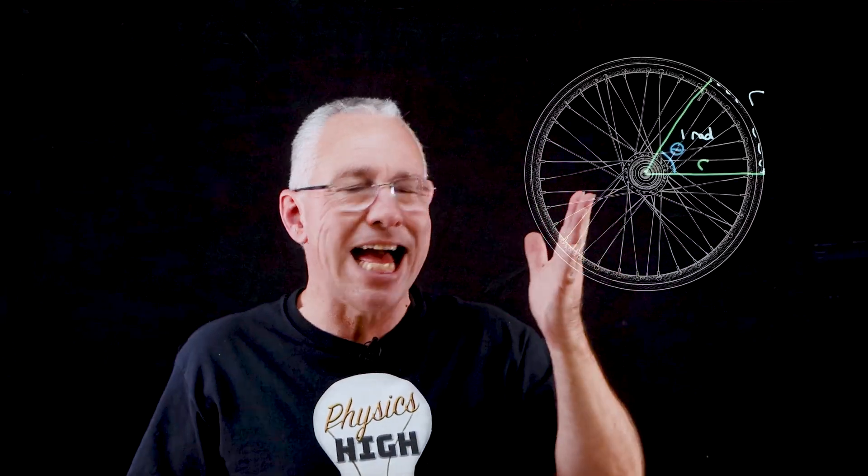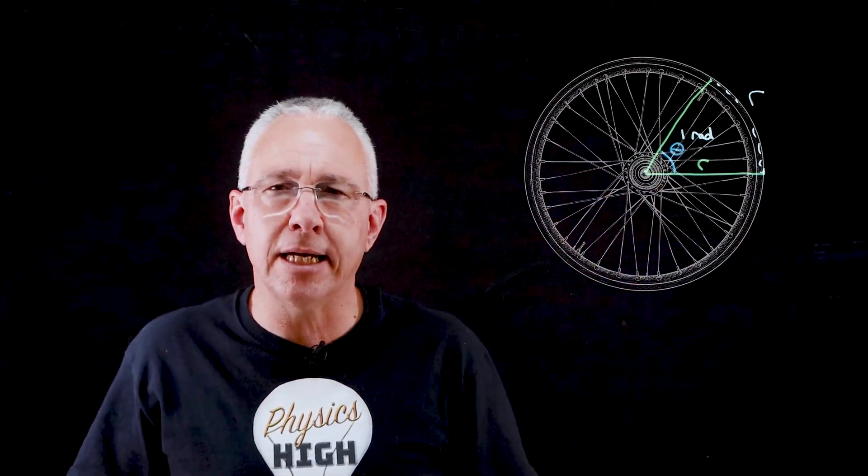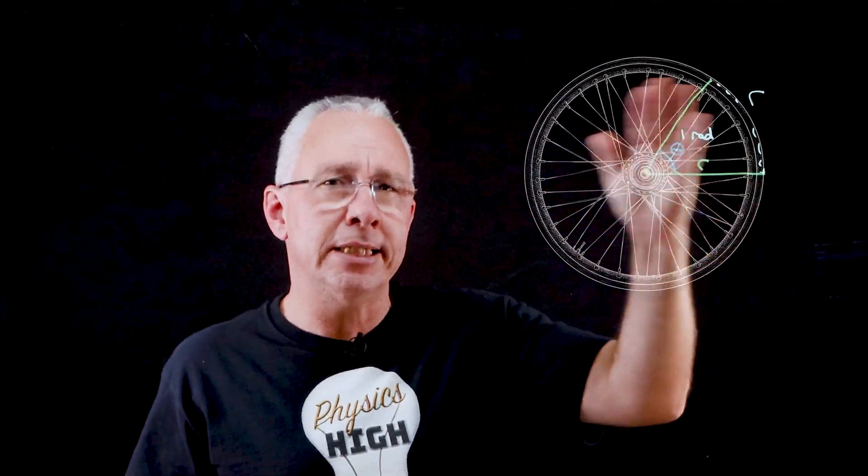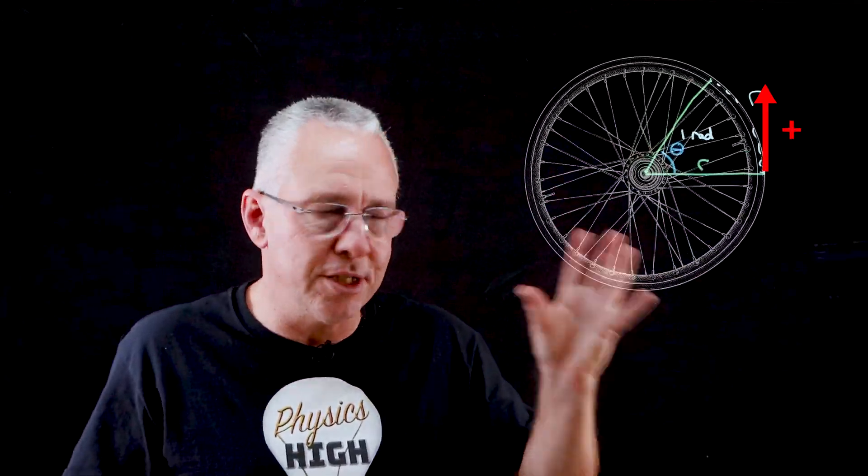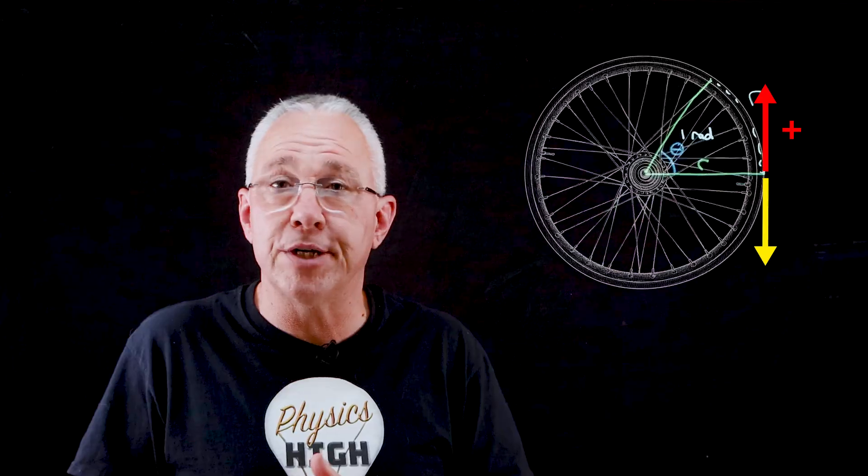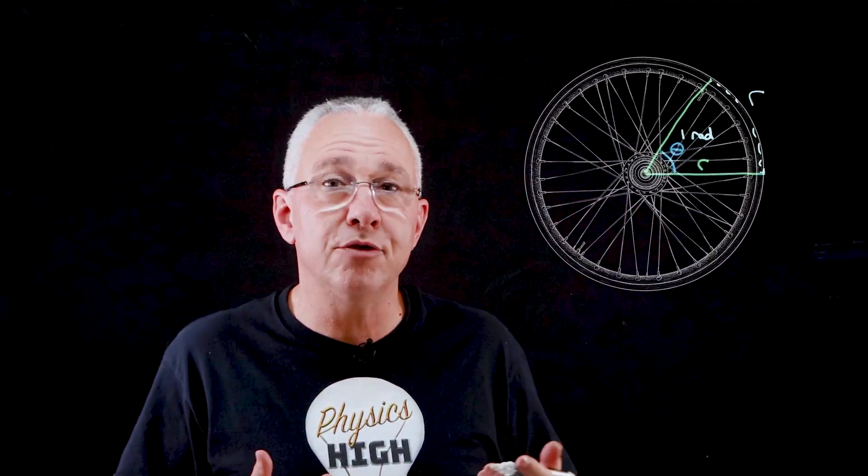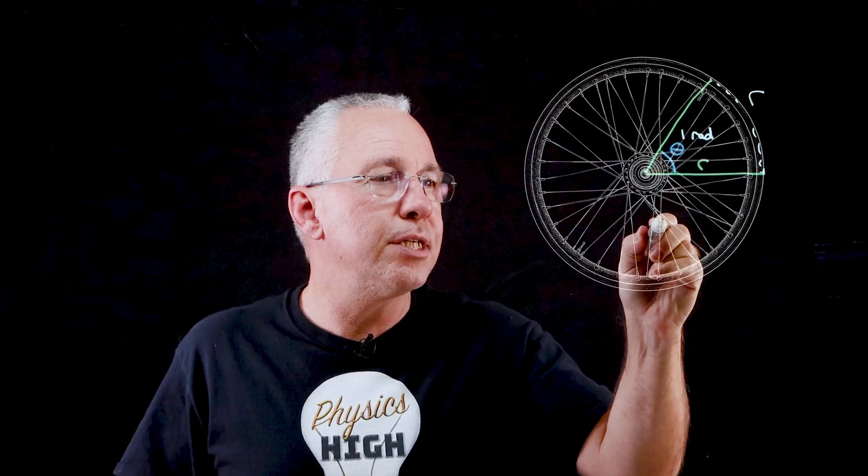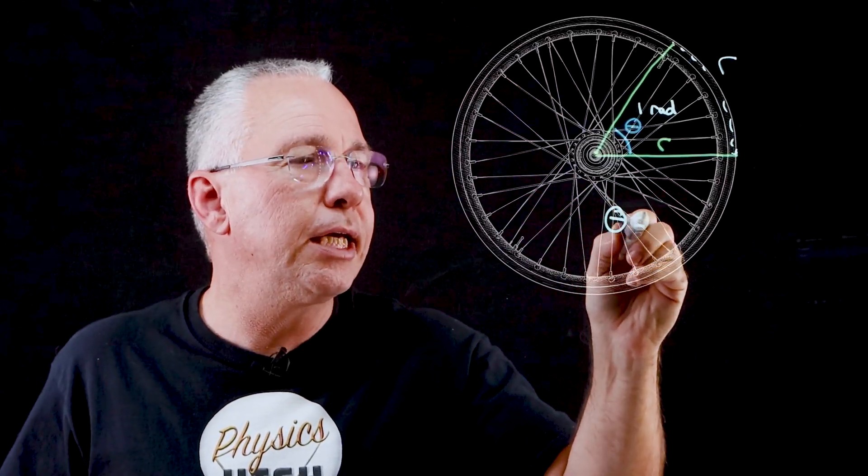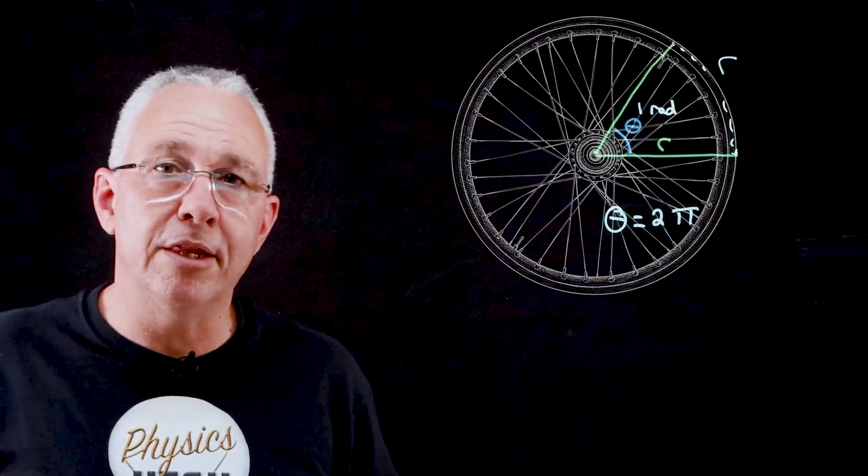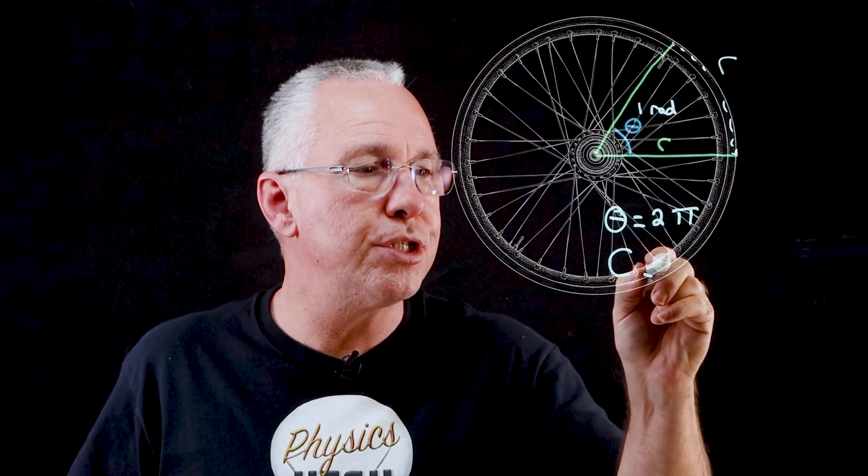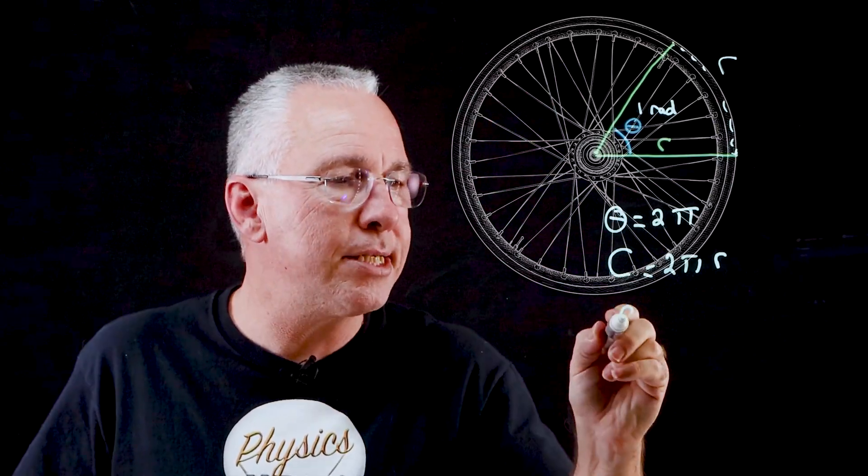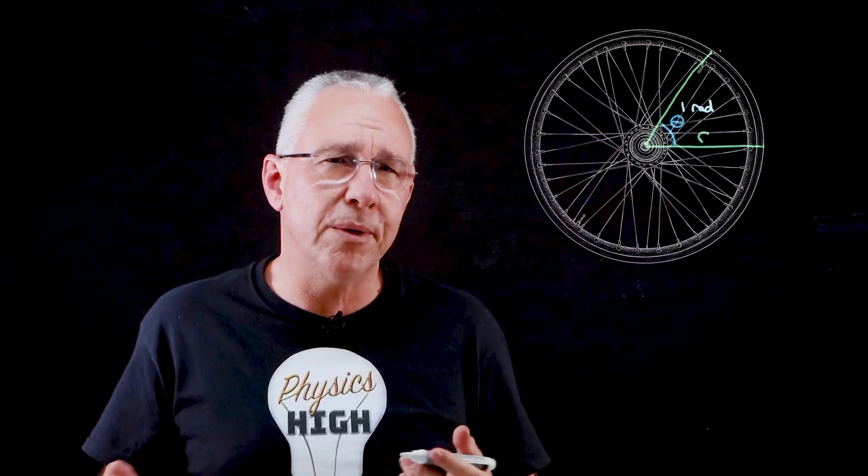Now like linear displacement, this angular displacement, which we have as theta, also is a vector quantity. So we need a direction. And by convention, what we say is that if it turns in the anti-clockwise direction or counterclockwise direction, we say it's a positive direction. Whereas if it's in the clockwise direction, we say it's a negative direction. We can now introduce the relationship between the linear displacement and the angular displacement. So since we have the angular displacement of a complete rotation equaling to 2π, and obviously the linear displacement, which happens to be the circumference, which is equal to 2πr, you can see now that the linear displacement s is equal to rθ.